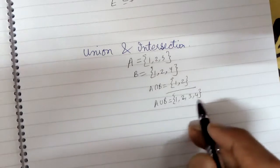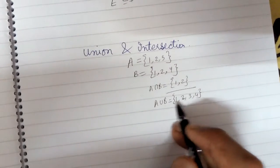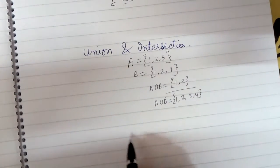In a set, we cannot repeat elements, so 1, 2 will not be repeated, so 1, 2, 3, 4 is the union.